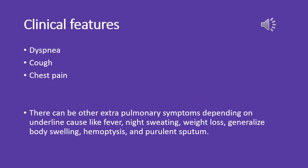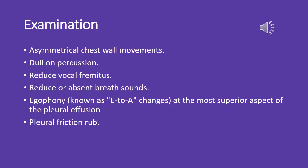Clinical features of pleural effusion include dyspnea, cough, and chest pain. Additional extrapulmonary symptoms may vary depending on the underlying cause, such as fever, night sweats, weight loss, generalized body swelling, hemoptysis (coughing up blood), and purulent sputum. On examination: asymmetrical chest wall movements, dullness on percussion, reduced vocal fremitus, reduced or absent breath sounds, and egophony — known as E-to-A changes.